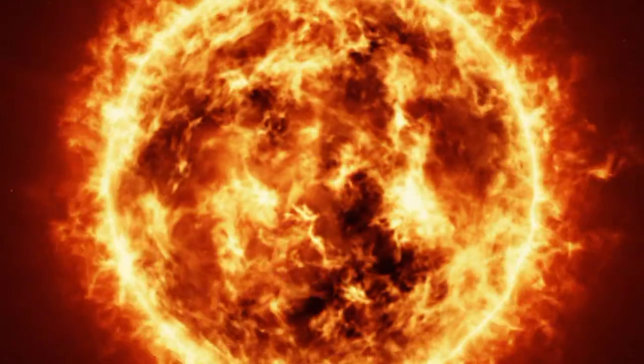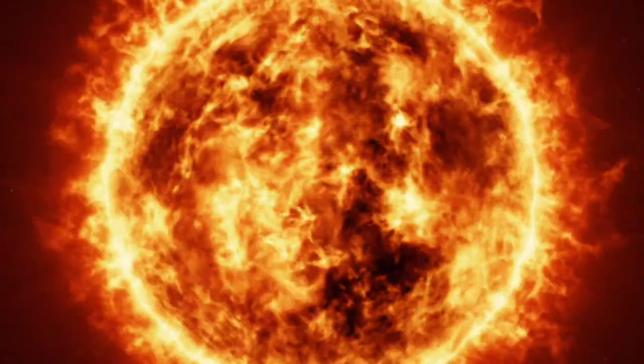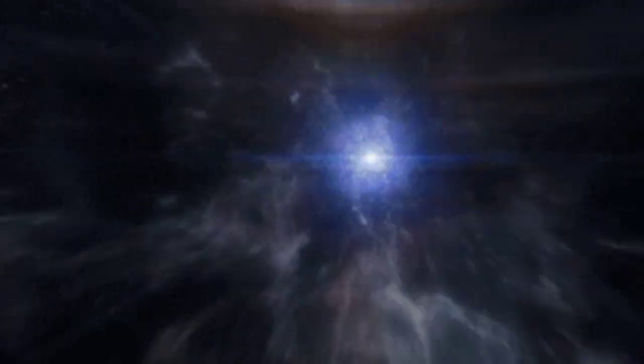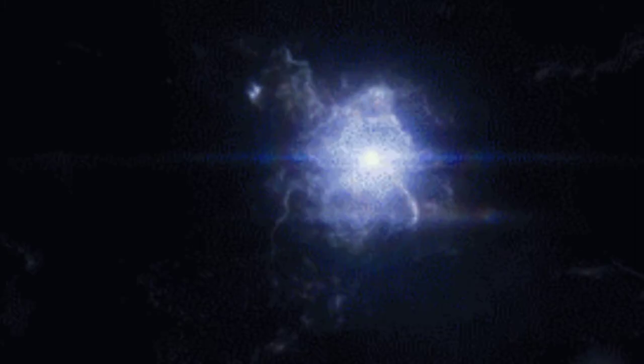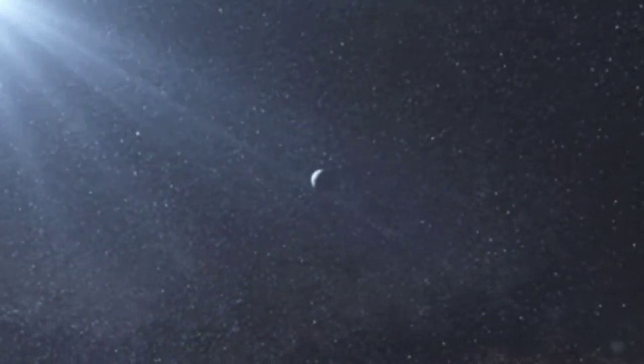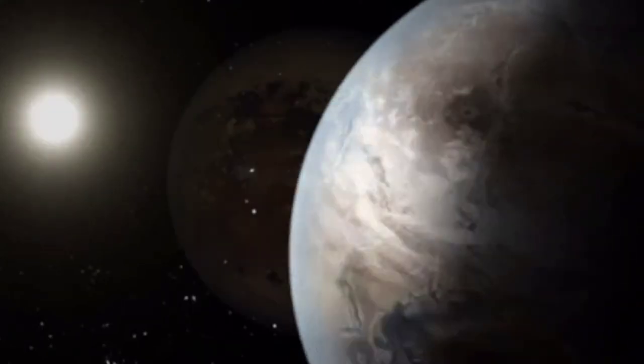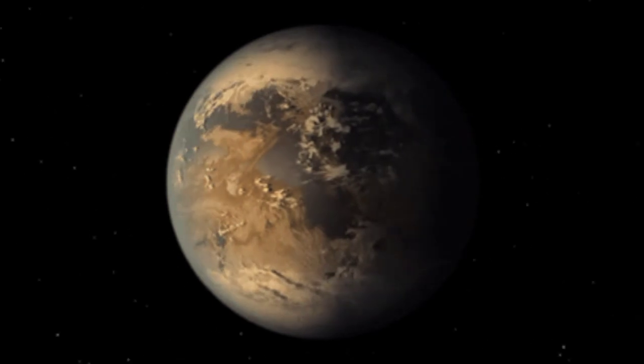The first two planets were too hot and close to the sun for life to evolve, while the four in the last were too far and too cold. Earth was in the right position for the existence and evolution of life. Over time, Earth began to cool down and became stable.